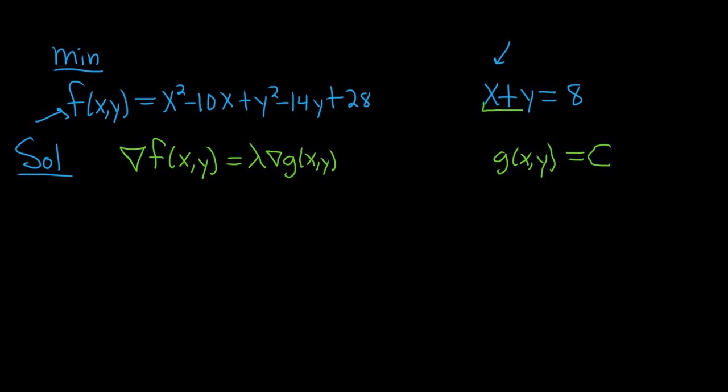So in this problem, g(x,y) is the x + y, and the constant is c. So all we have to do is solve these equations for x and y. Once we get x and y, we plug them back into our function, and then we have our minimum.